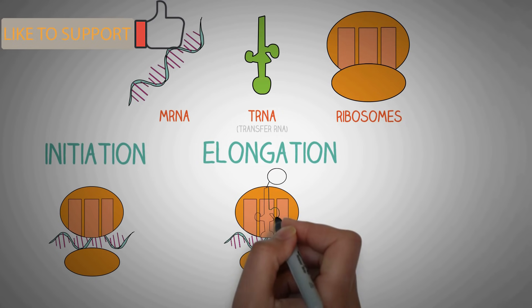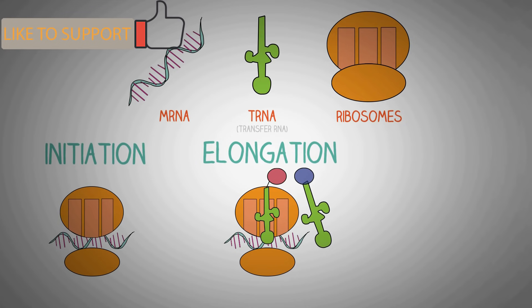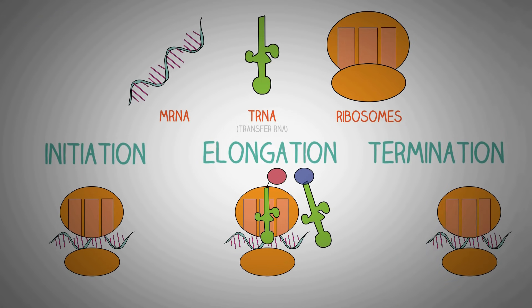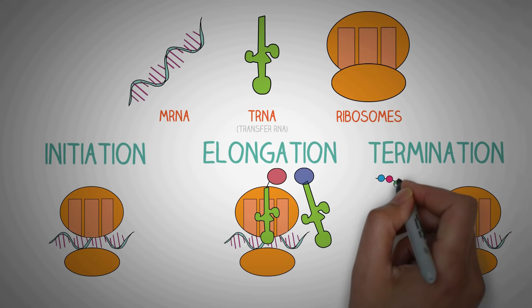the tRNA transfers amino acids to the ribosome which are joined together to form a polypeptide chain. In the last step known as termination, the ribosomes release the polypeptide when it reads a stop signal on the mRNA.